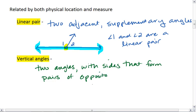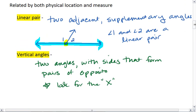You want to look for the x. So if you have vertical angles, they'll share this vertex. And it essentially creates an x.